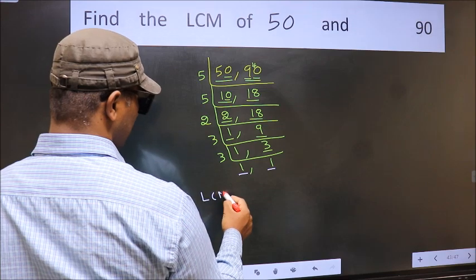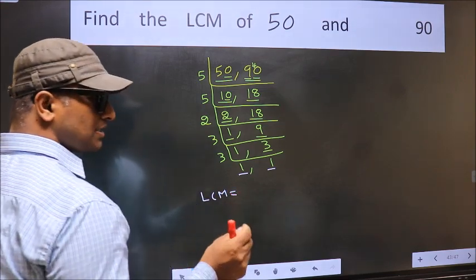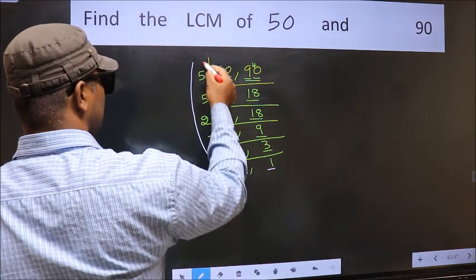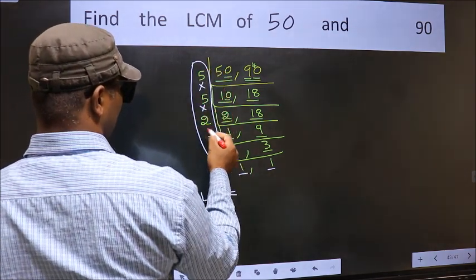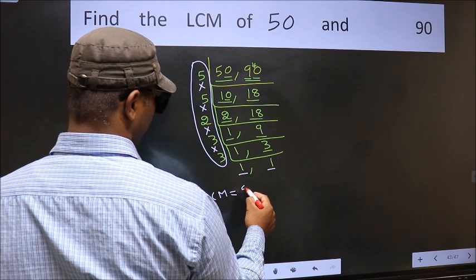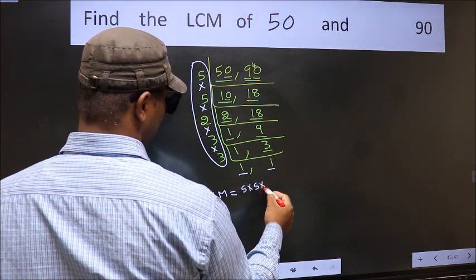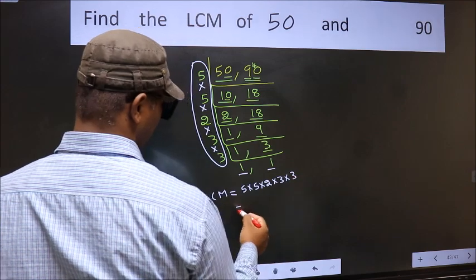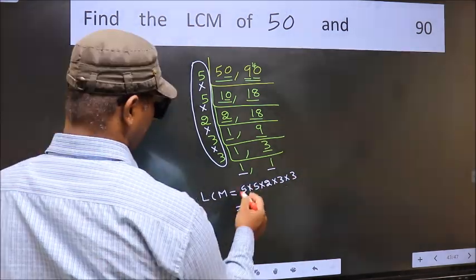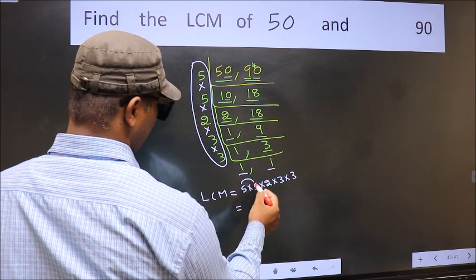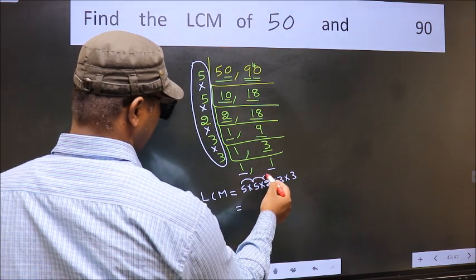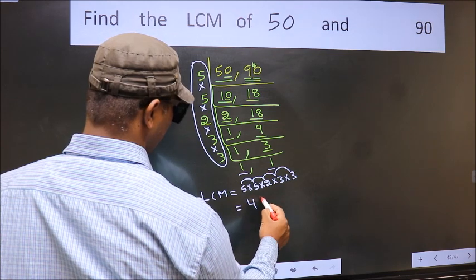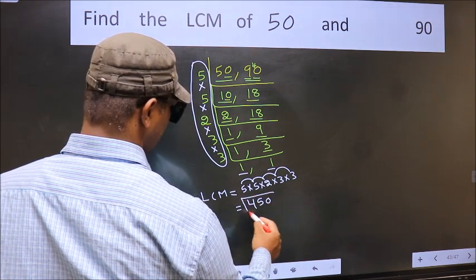So our LCM is the product of these numbers: that is 5 into 5 into 5 into 2 into 3 into 3 into 3. Let us multiply these numbers. 5 into 5 is 25, into 2 is 50, into 3 is 150, into 3 is 450. 450 is our LCM.